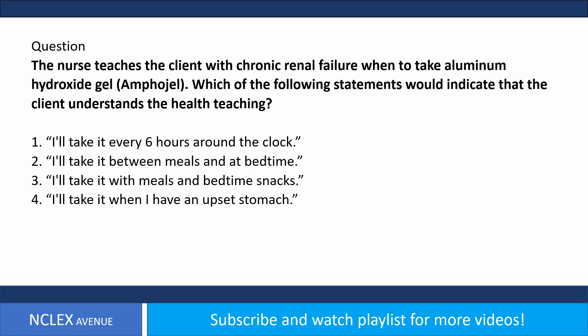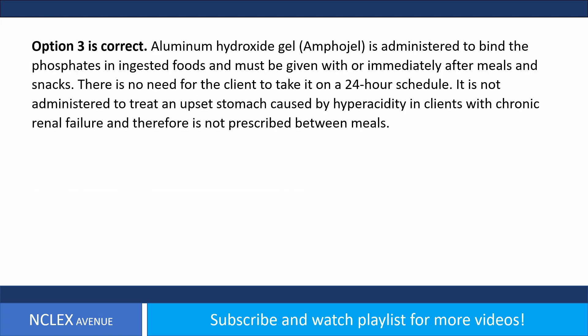Answer: option three is correct. Aluminum hydroxide gel (Amphojel) is administered to bind the phosphates in ingested foods and must be given with or immediately after meals and snacks. There is no need for the client to take it on a 24-hour schedule. It is not administered to treat an upset stomach caused by hyperacidity in clients with chronic renal failure, and therefore is not prescribed between meals.